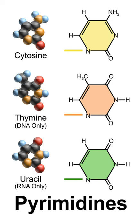Other hydrogen bonding modes, wobble pairings, are available in both DNA and RNA, although the additional hydroxyl group of RNA expands the configurations through which RNA can form hydrogen bonds.